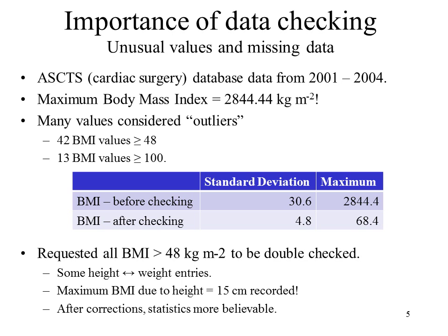So when you're looking at tables in journal articles, always use common sense — just like I used common sense when looking at the body mass index to find an obvious error that had not been identified before.